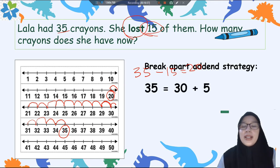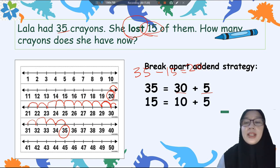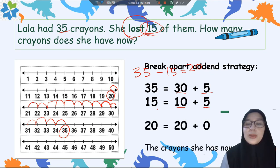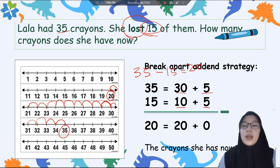Next I will show the other way. I will use break apart strategy. First please separate 35 to become 30 plus 5 right? Dipisahkan dulu puluhan dan satuannya menjadi 30 ditambah 5. And then next, 15 equals 10 plus 5. Kemudian yang 15 juga dipisahkan jadi 10 ditambah 5. And then the result is 20, because 5 minus 5 equals 0 and then 30 minus 10 equals 20. So the crayons she has now are 20.